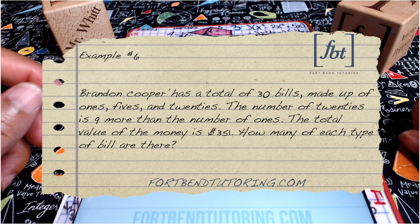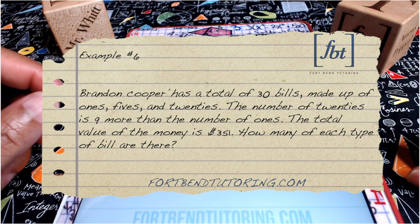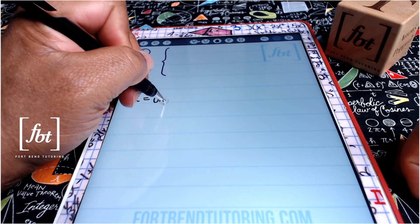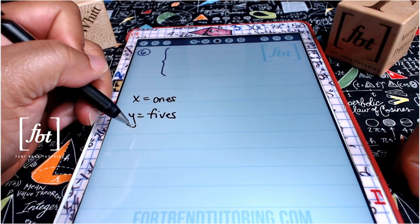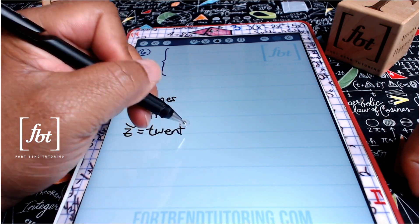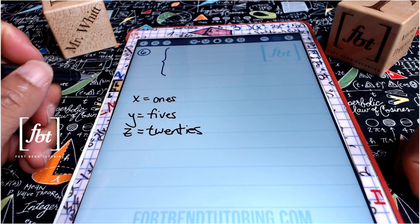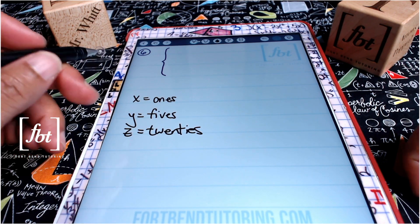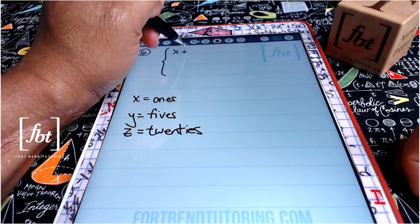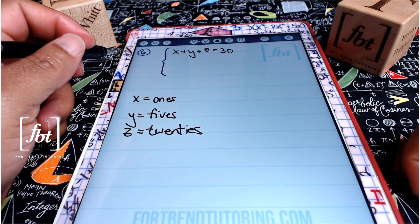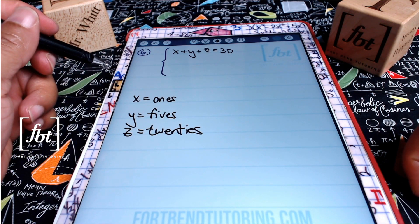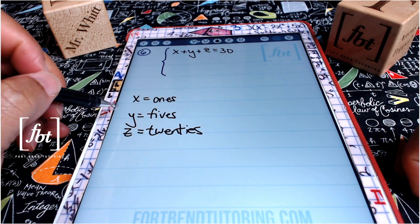Moving on to problem number six: Brandon Cooper has a total of 30 bills made up of ones, fives, and twenties. The number of twenties is nine more than the number of ones. The total value of the money is $351. How many of each type of bill are there? We need to identify our unknown variables: x for the ones bills, y for the fives, and z for the twenties. Since Brandon has a total of 30 bills, our first equation is x plus y plus z equals 30.